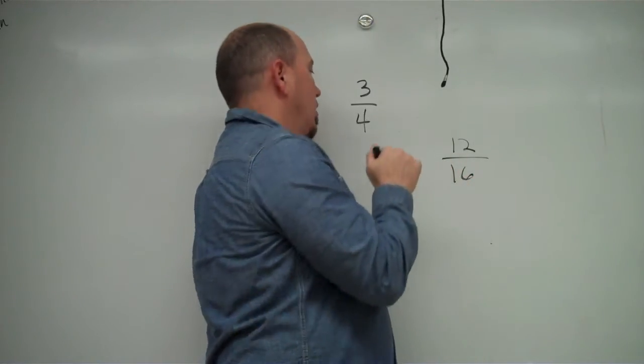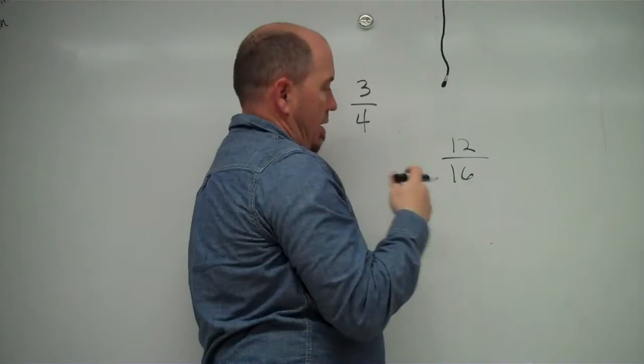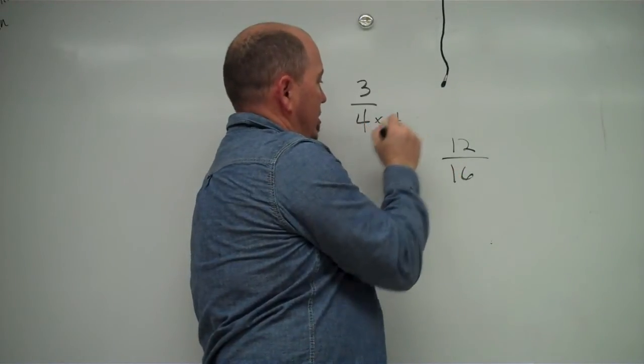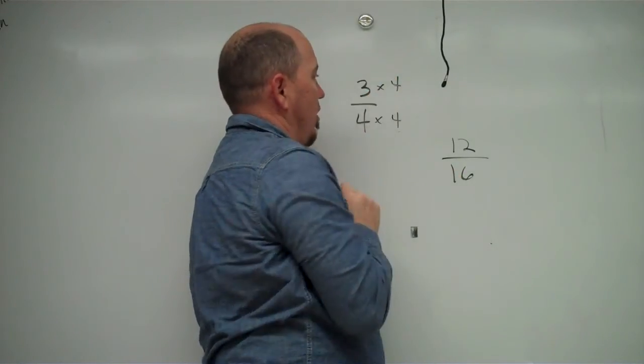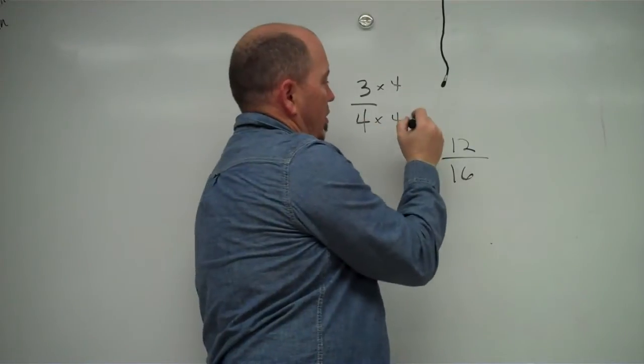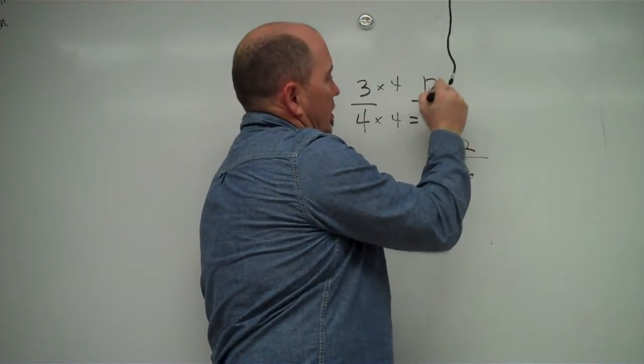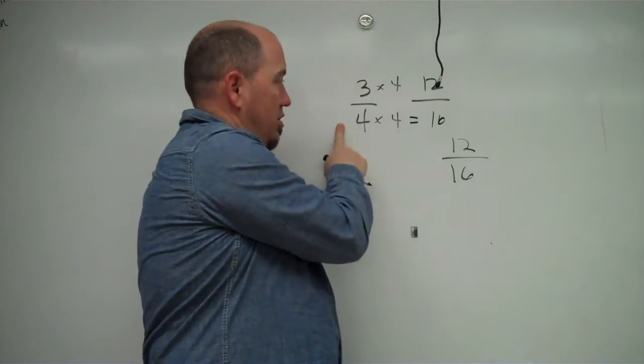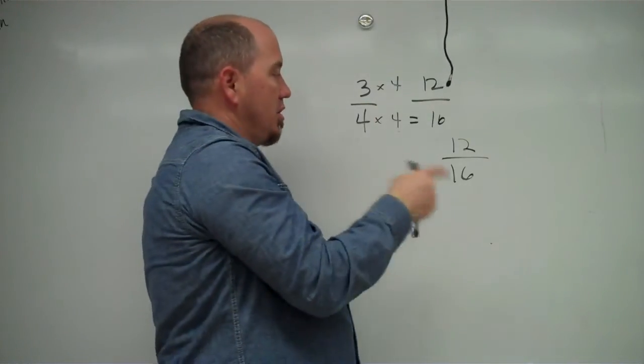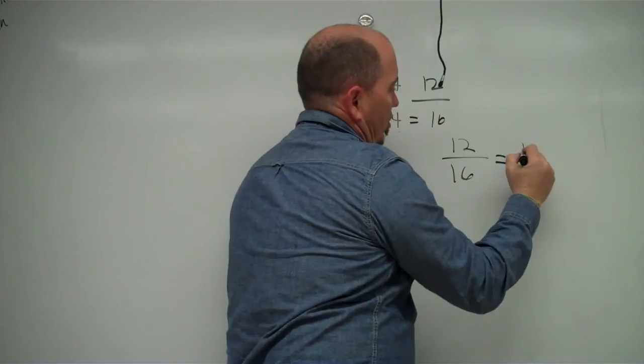So how can I do that? Well, I know 4 times 4 is 16. So I'm going to take this and I'm going to multiply it by 4 and then I'm going to multiply that by 4. So 4 times 4 equals 16. And 3 times 4 is 12. So 3 fourths is also equivalent to 12 sixteenths. So in this case, those two are equivalent fractions.